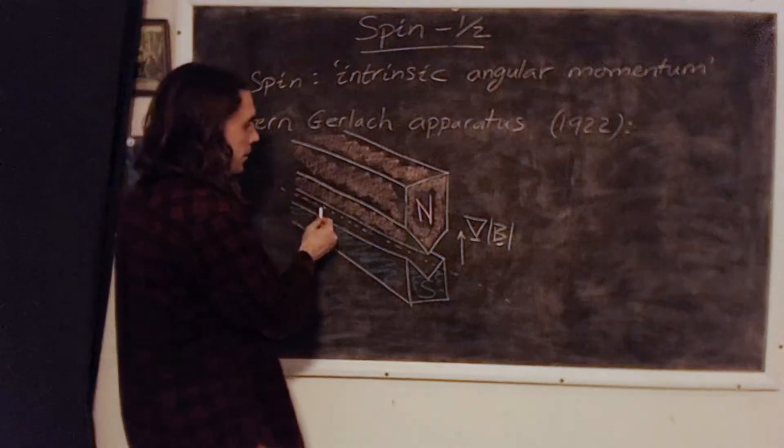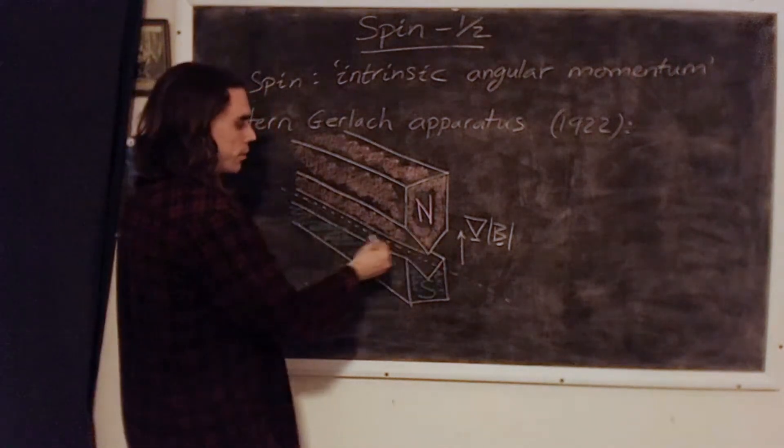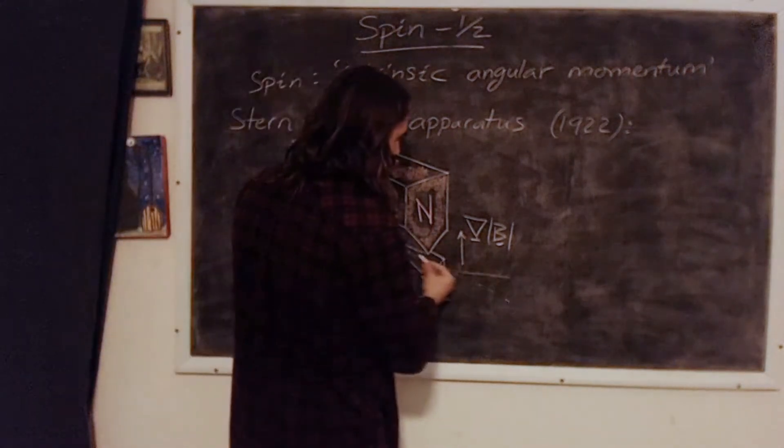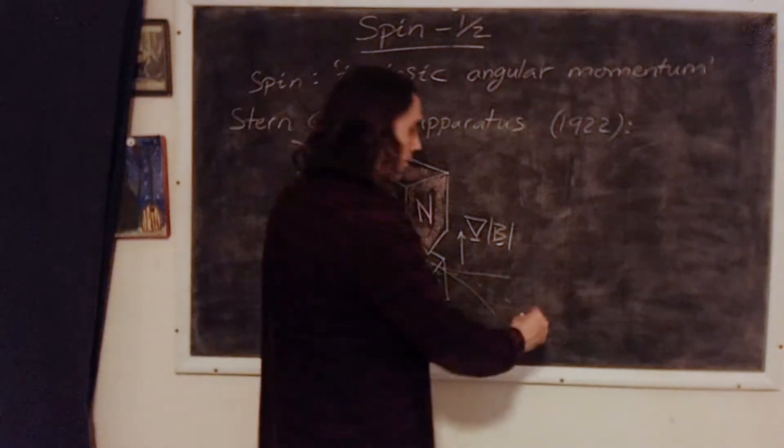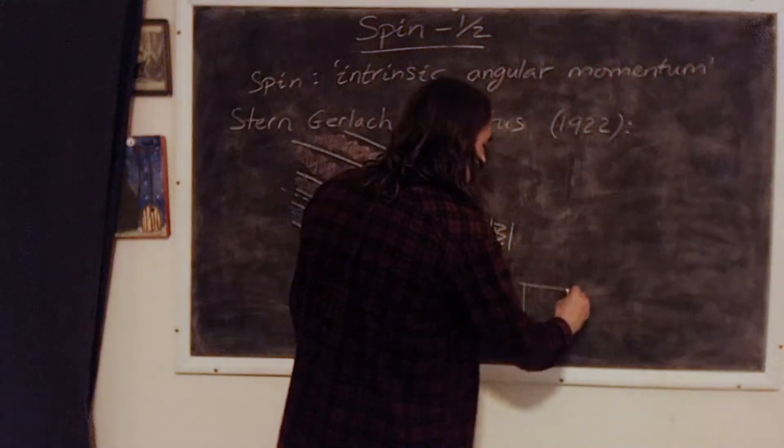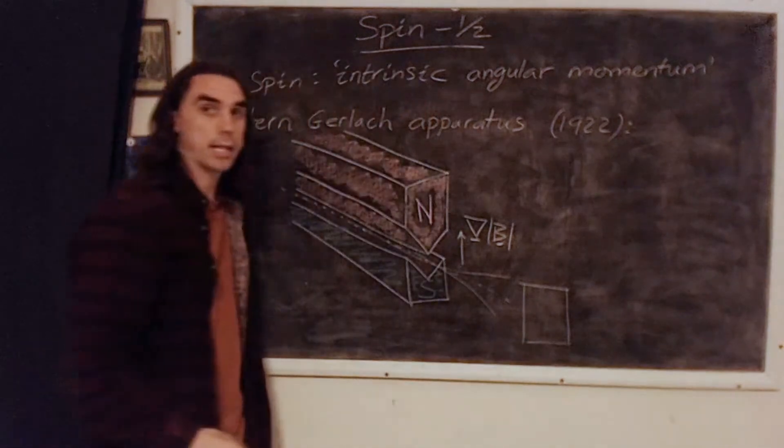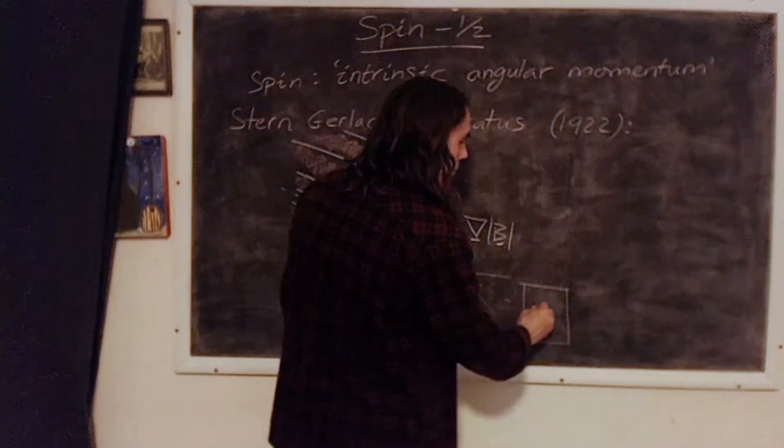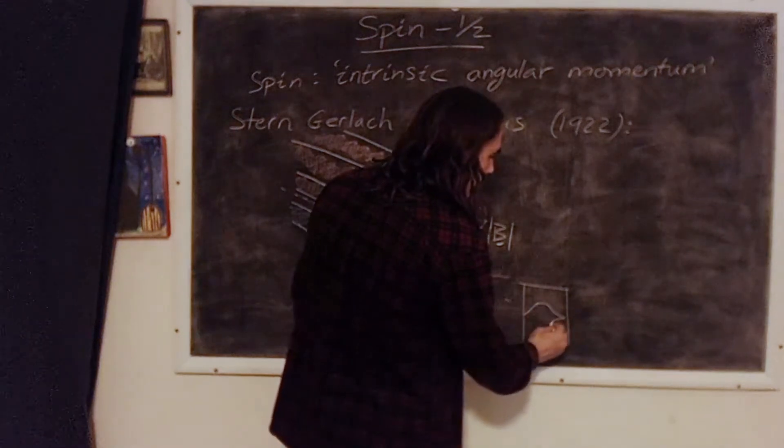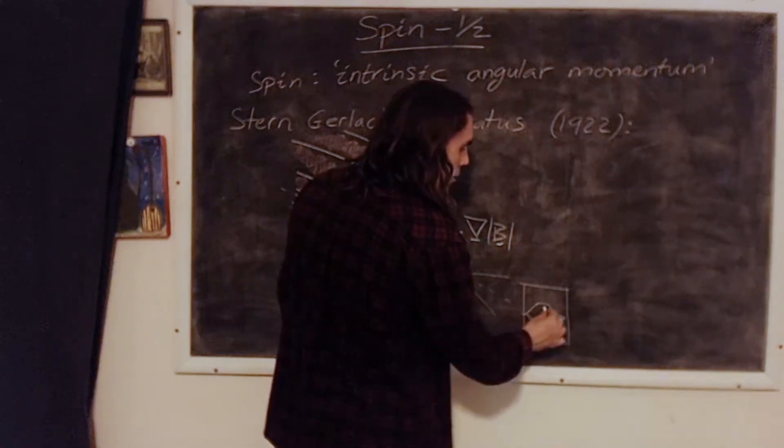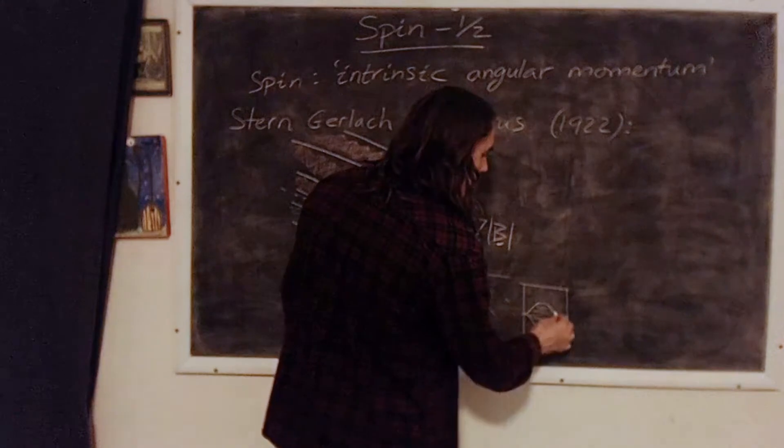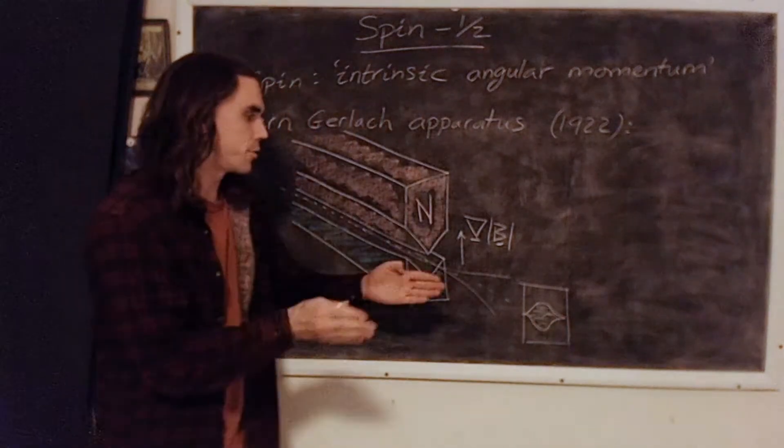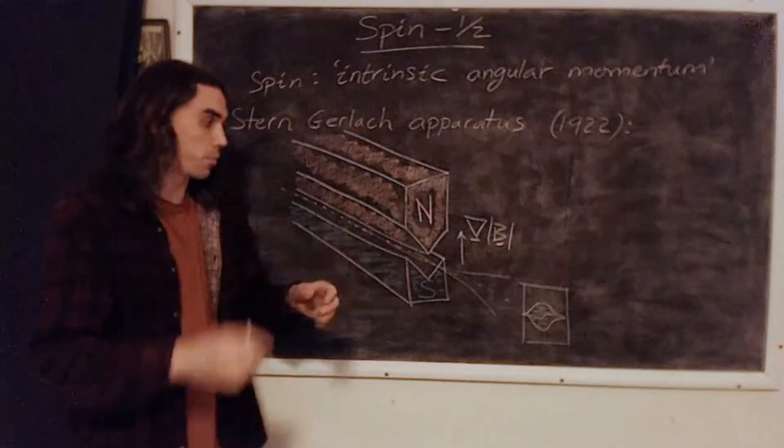And they'll deflect in the direction of the gradient. So classically, if we have a screen over here, or some kind of measurement device for measuring where the electrons land, classically we'd expect some kind of spread that would look like this. And this would all be filled in. So it spreads out left to right just because there's going to be some natural spread of the beam.